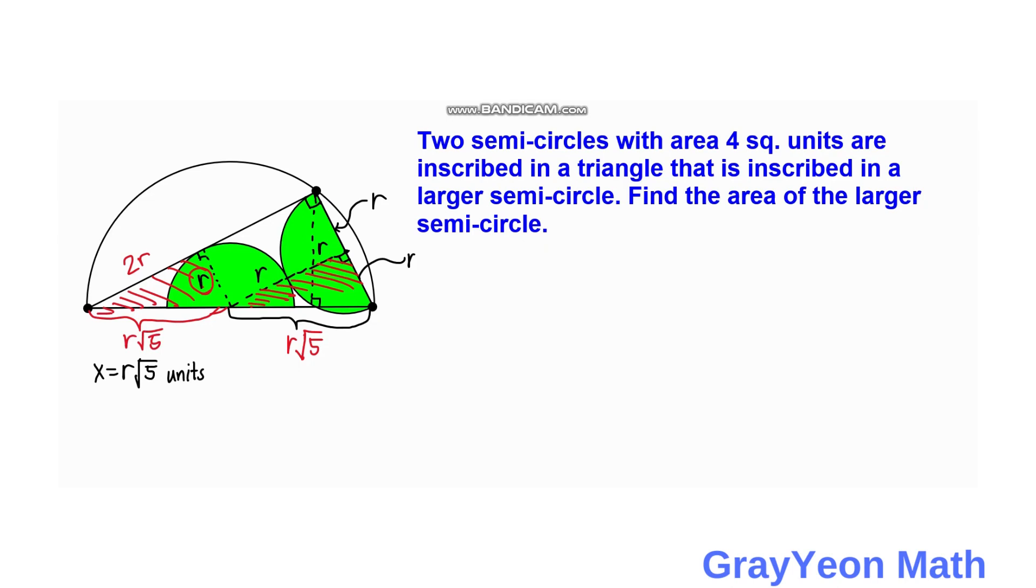Next thing we need to do is represent the area in terms of the radius. So area equals pi times the radius squared over 2. So area equals pi times R square root of 5 squared over 2, which equals 5 pi R squared over 2.